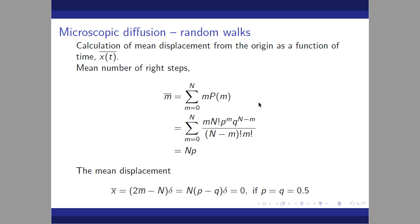Calculating the binomial distribution, we find the mean as a function of time X-bar(T). The mean number of right steps M-bar equals the expectation value of M times P(M). So M-bar equals N times P. The mean displacement is X-bar = (2M-bar − N)δ = N(P − Q)δ, which equals zero if P equals Q equals 0.5.